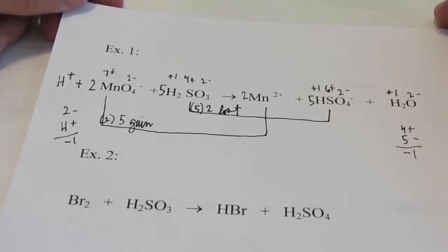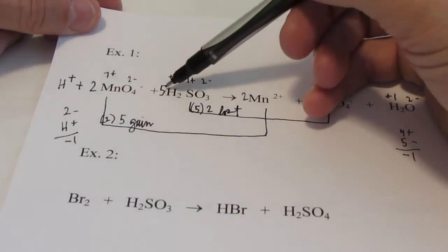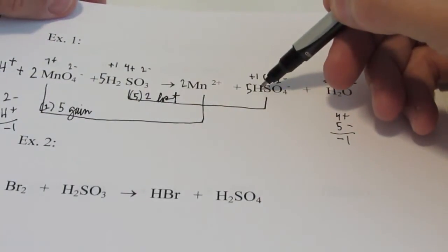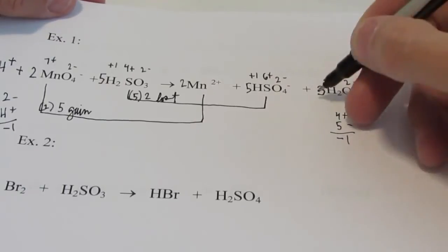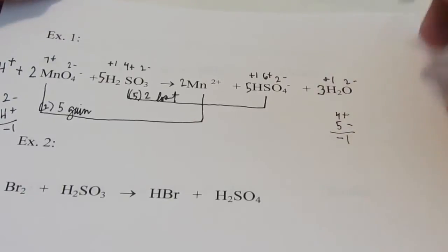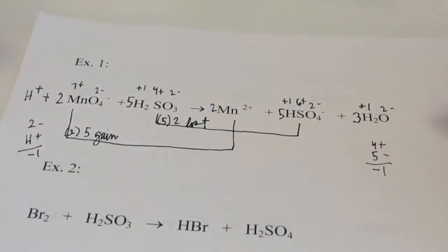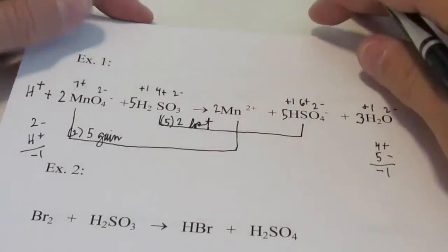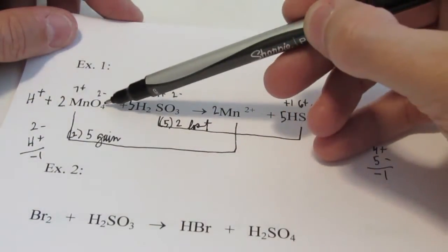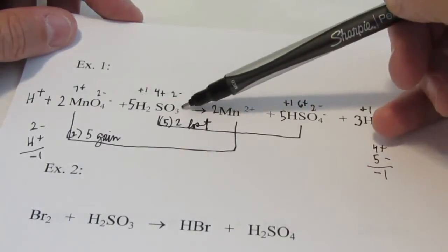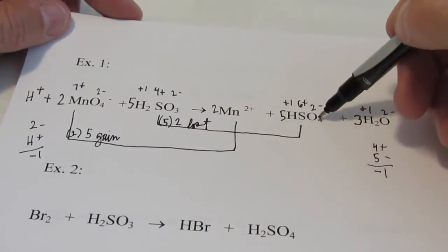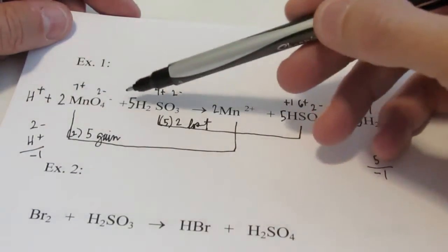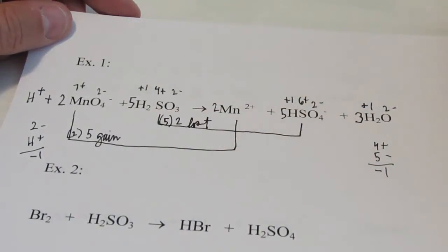The last step: balance all hydrogens using water. I have ten hydrogens here plus one more I added makes eleven. I have five so far, so let's put a three in front of water — that gives six more hydrogens for a total of eleven on both sides. Now if I've done this correctly, the oxygen should balance. I have eight oxygens here plus fifteen more is twenty-three. On this side I have twenty plus three more is twenty-three. They balance! This is my balanced net ionic equation for that reaction.